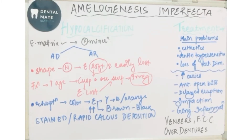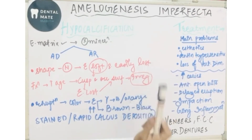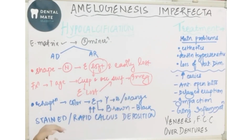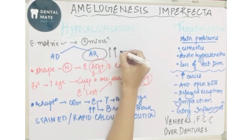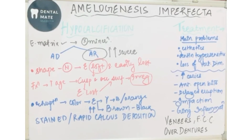Unlike the hypoplastic type of amelogenesis imperfecta where unerupted teeth and anterior open bite were commonly seen, these features are not commonly seen in the hypocalcified type — because here the tooth shape is normal, the enamel is just laid down normally in terms of shape. The autosomal dominant and autosomal recessive patterns are almost the same, but the autosomal recessive type is more severe.